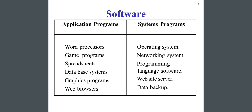Software is mainly of two kinds: application programs and system programs. In application programs, there are word processors, game programs, spreadsheets, database systems, graphic programs, and web browsers. In system programs, there are operating systems, networking systems, programming language software, website servers, and data backup.